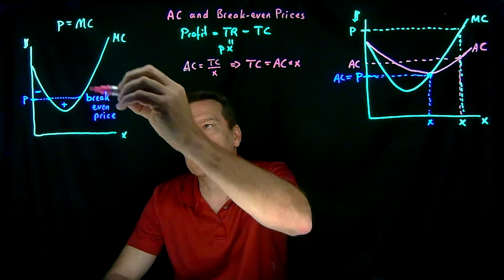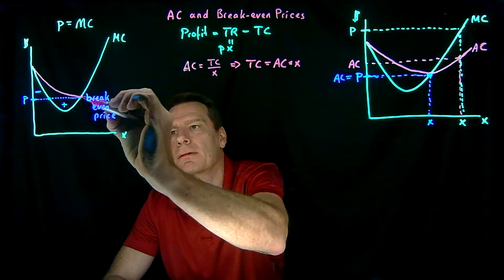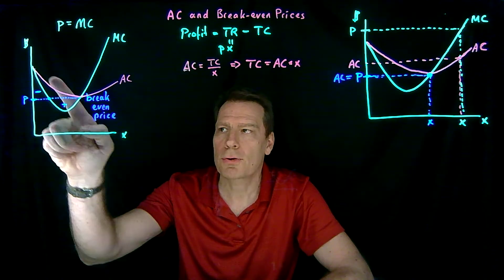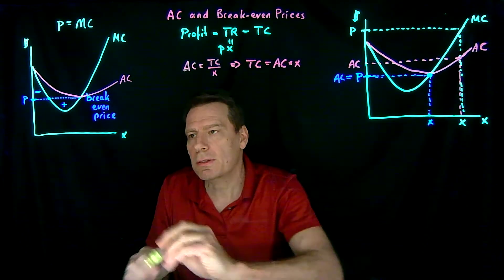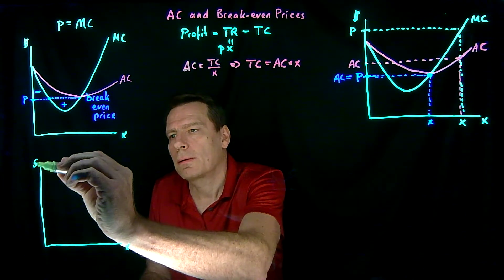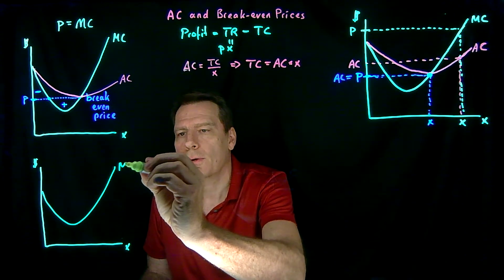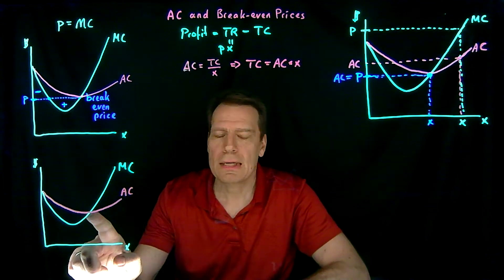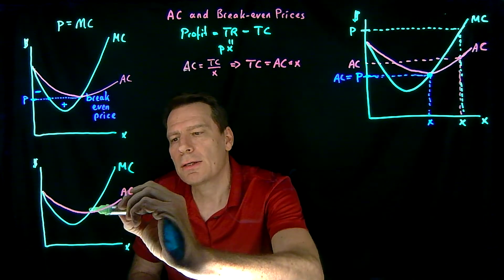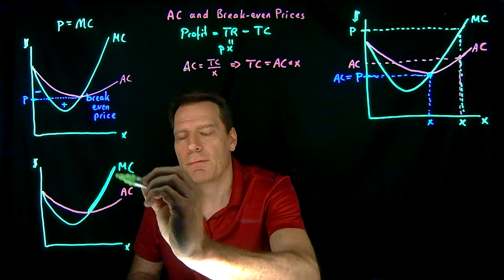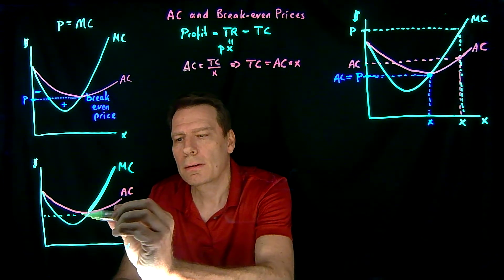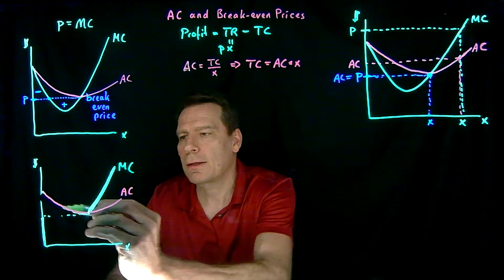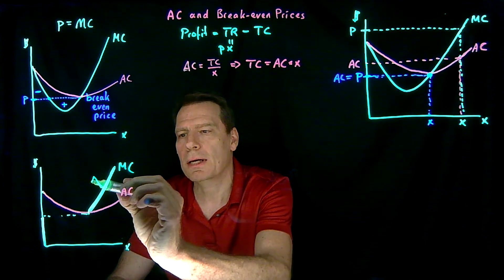If we put the average cost curve in the picture, it has to cross the marginal cost at the break-even price. We can identify the break-even price by finding where the average cost crosses the marginal cost. Drawing a U-shaped marginal cost curve and the average cost curve, the break-even price occurs at their intersection. The supply curve is just the portion of the marginal cost that lies above the average cost. Below that price the firm produces nothing, so we remove that portion and are left with the firm's supply curve.